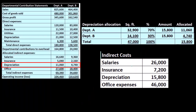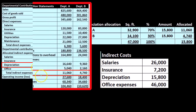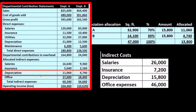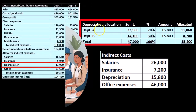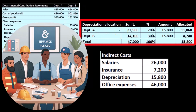Now we'll do the same thing with depreciation using the same method. We have Department A and Department B, and we'll use square footage again, which seems appropriate for depreciation on a building. We take the 32,900 and 14,100, which adds up to 47,000. The 32,900 divided by 47,000 once again gives us that 70/30 breakout — the same calculation, the only difference is the expense being allocated.